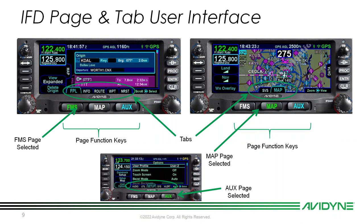A little more about our page and tab user interface. On the IFD 440 there are three page buttons — FMS, map, and auxiliary. Within each page there are a couple of different tabs. To get to the route tab, push the FMS button and then the route tab. It defaults to the FPL tab. From the map tab you can view top-down with north up, track up, or heading up orientations, plus the synthetic vision page. The aux page has audio settings, utility settings, calculators, checklists, setup for user options, a system tab for databases, and alert tabs.